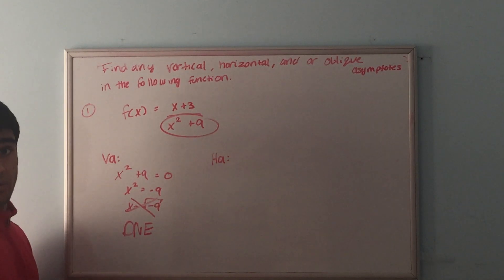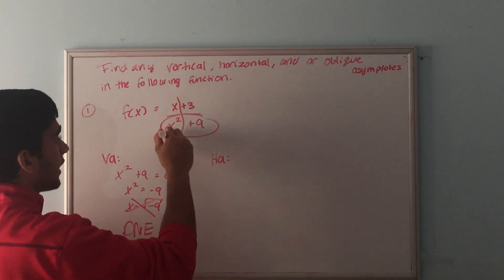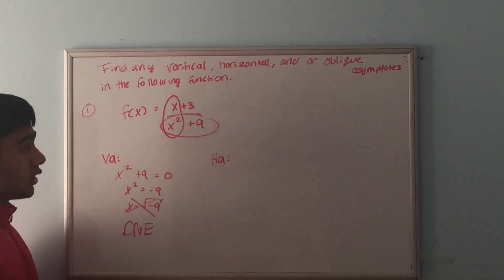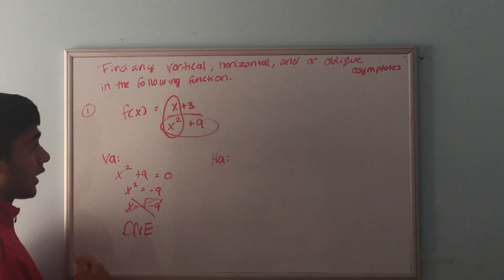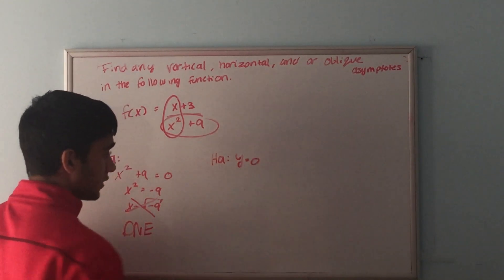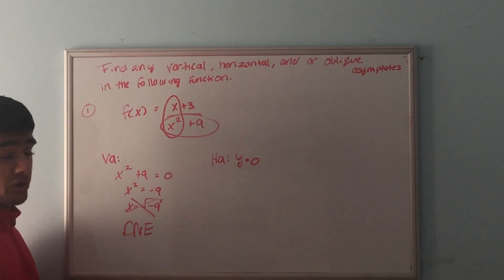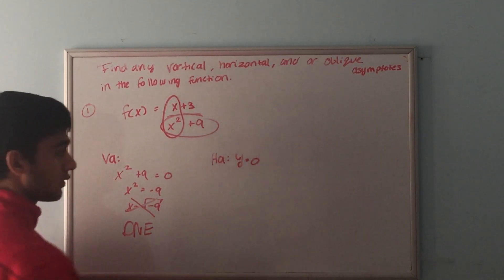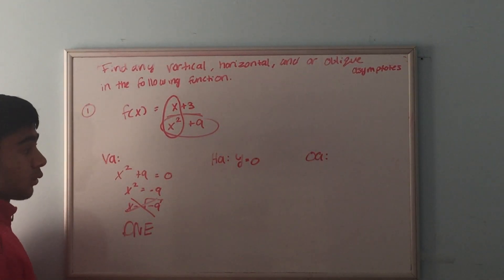Now let's look for the horizontal asymptote. We focus on the highest power variable in both the numerator and denominator: x in the top and x squared in the denominator. The power in the bottom is higher than the power in the top, so the bottom will outrun the top in the long run, and the horizontal asymptote is y = 0. This is true for any function where the denominator has a higher power than the numerator.